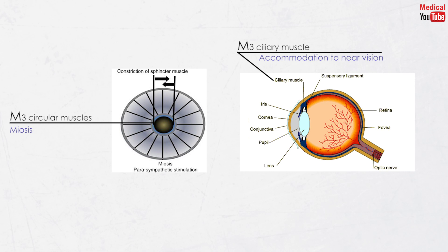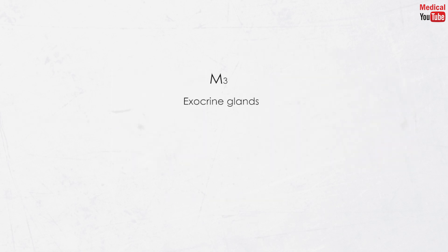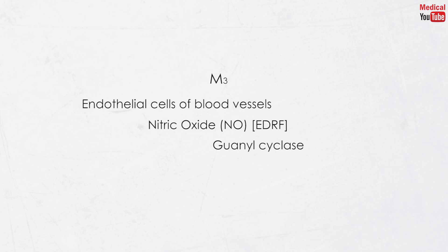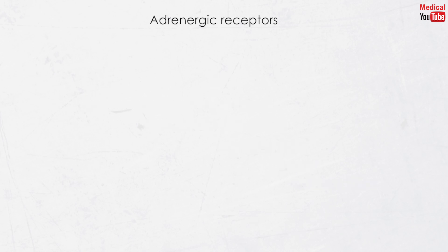M3 receptors in the eye are also responsible for the reduction of intraocular pressure. M3 receptors are located in exocrine glands such as salivary, gastric, lacrimal, and sweat glands, and are responsible for increasing their secretions. Stimulation of M3 receptors in endothelial cells of blood vessels causes the release of nitric oxide, or EDRF (endothelial-derived relaxing factor), which activates guanylyl cyclase, releasing cGMP, and ultimately causing vasodilation.